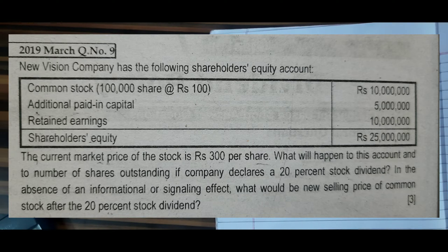What will happen to this account and/or number of shares outstanding if the company declares a 20% stock dividend? In the absence of the informational or signaling effect, what would be the new selling price of a common stock after the 20% stock dividend?